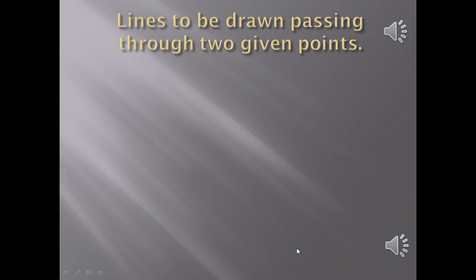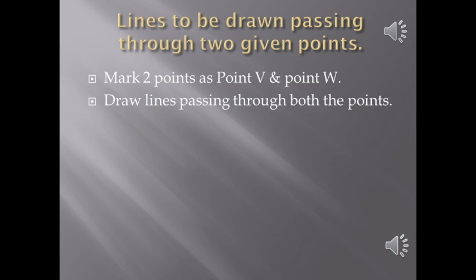Now let's draw lines passing through two given points. Mark two points as point V and point W, draw lines passing through both the points. Your line should pass through both the points. Find out how many lines can you draw.